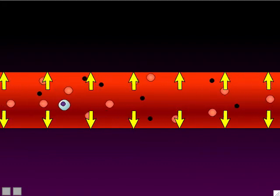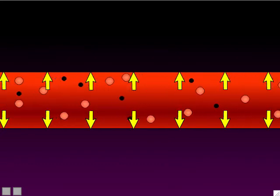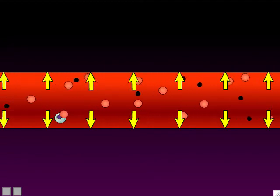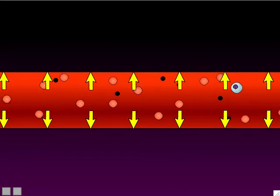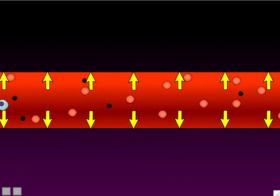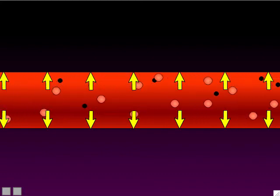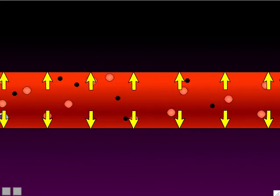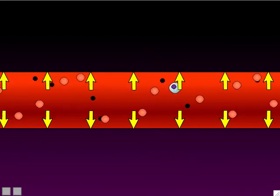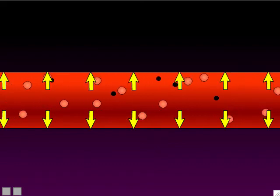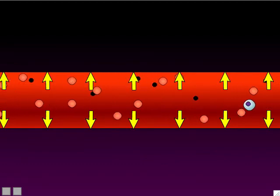All measurements have some sort of unit. Like if you're measuring how long something is, you'd use meters in the metric system. Cardiac output's units were milliliters per minute. Well, blood pressure has its own units: millimeters of mercury, written as mmHg. That is the unit of blood pressure — millimeters of mercury.